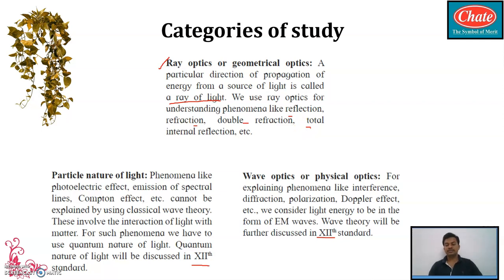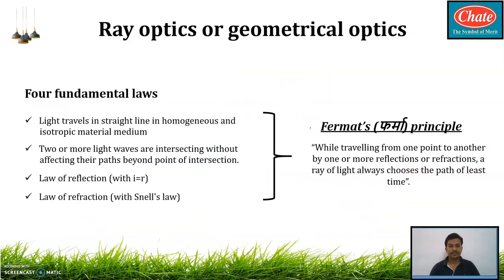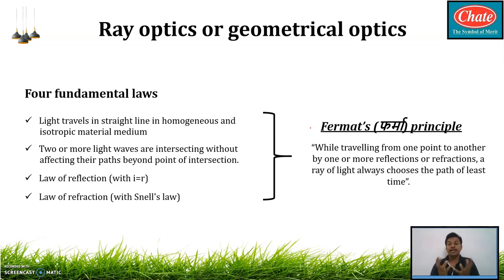So in summary: ray optics covers reflection, refraction, double refraction, and total internal reflection. Wave optics applies when light behaves as a wave. Ray optics is also called geometrical optics — the reason is simple. A ray is a straight line, and when rays travel, they produce geometric diagrams, hence the name geometrical optics.